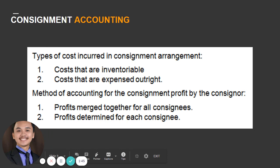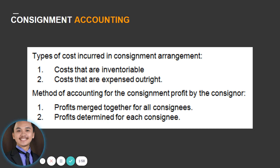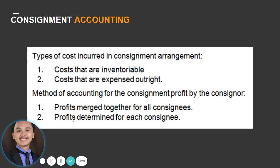We have types of costs incurred in a consignment arrangement: costs that are inventoriable and costs that are expensed outright. If a cost is inventoriable, it will be added to the total cost of consigned goods. If it is expensed outright, it will be recognized as an expense when incurred. There are two accounting methods for the consignor: profits merged together for all consignees, or profits determined separately for each consignee.